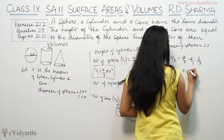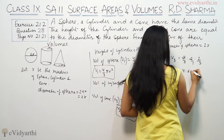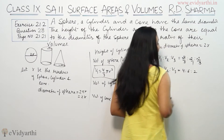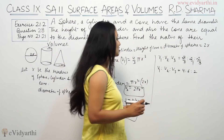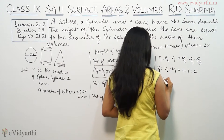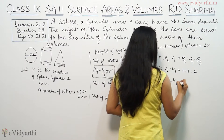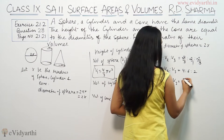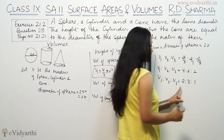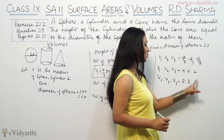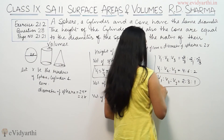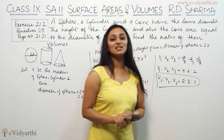Multiplying by 3: 4/3 × 3 = 4, 2 × 3 = 6, 2/3 × 3 = 2. So we get 4 : 6 : 2. Taking out the common factor of 2 from all three gives the final ratio 2 : 3 : 1.